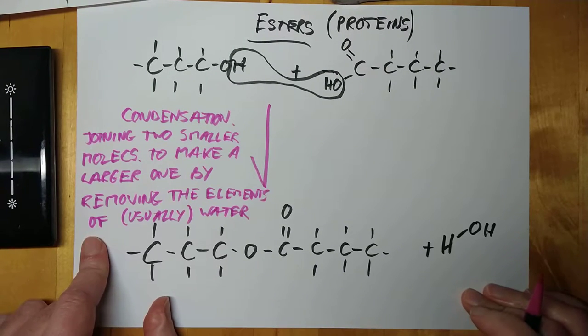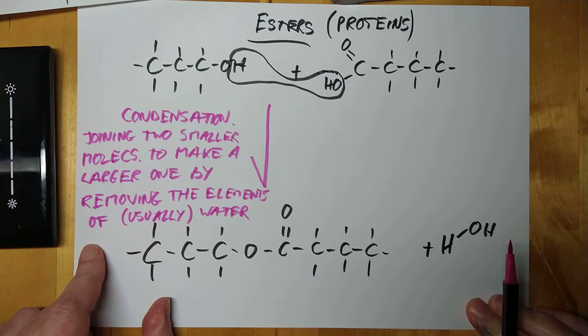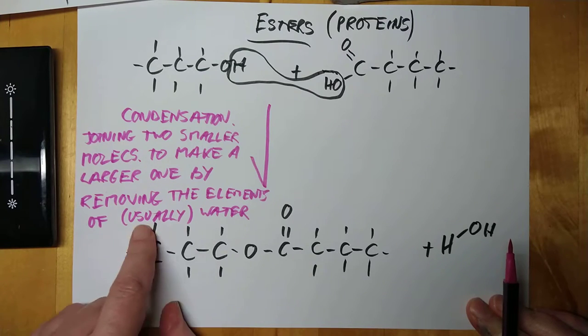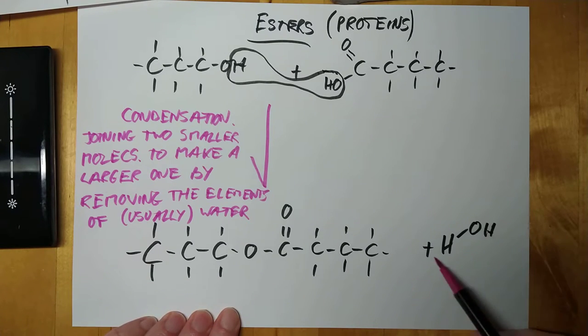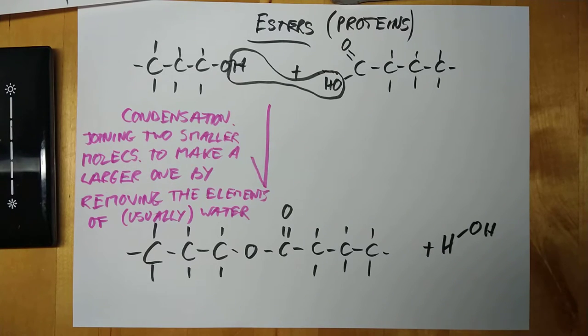If you've done that, hopefully the name we came up with was propylbutanoate. So, that is propylbutanoate. And making the ester, what we've done is we've joined two smaller molecules together to make a larger one by removing the elements of water. That is the definition of a condensation reaction.